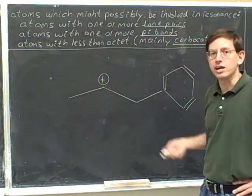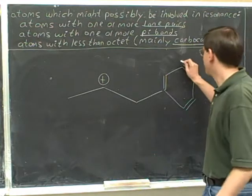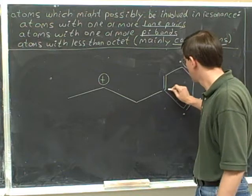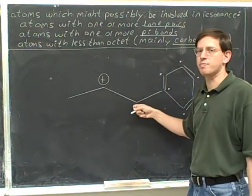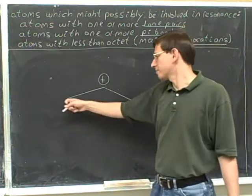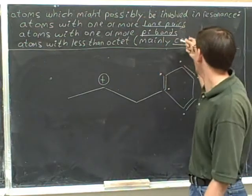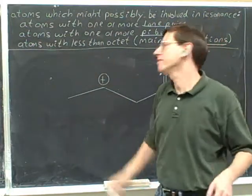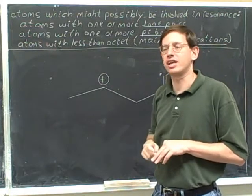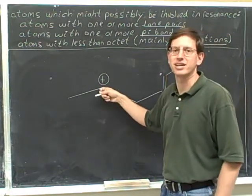Try this example. Identify with a dot all the atoms that are candidates for resonance. All the atoms in this ring have pi bonds, so they're all candidates for resonance. This atom does not have any of these characteristics, so it cannot participate in resonance. And that means this one can't either. This atom should not get a dot — even though it's a carbocation, it's not connected to anybody else who can participate in resonance.